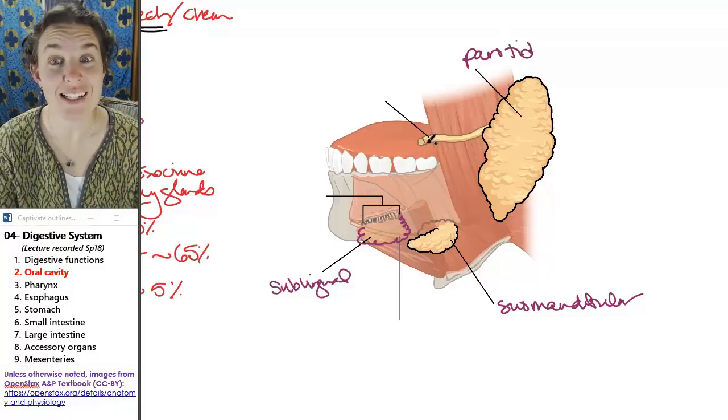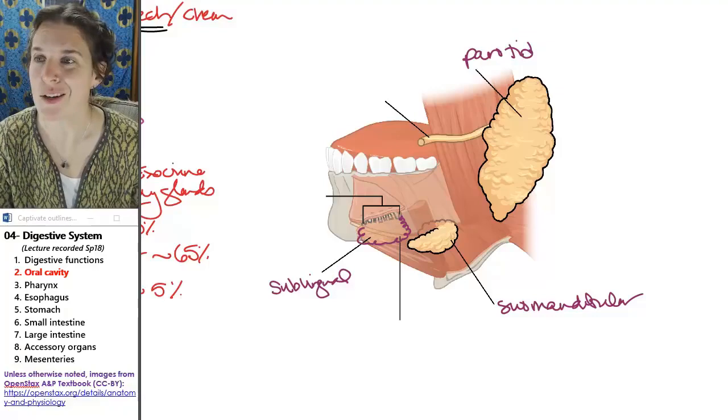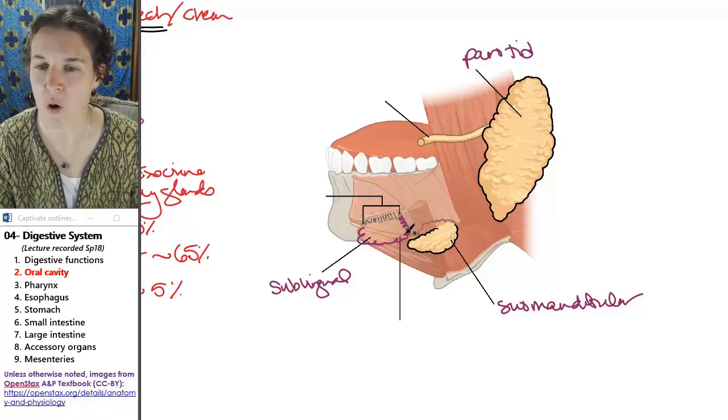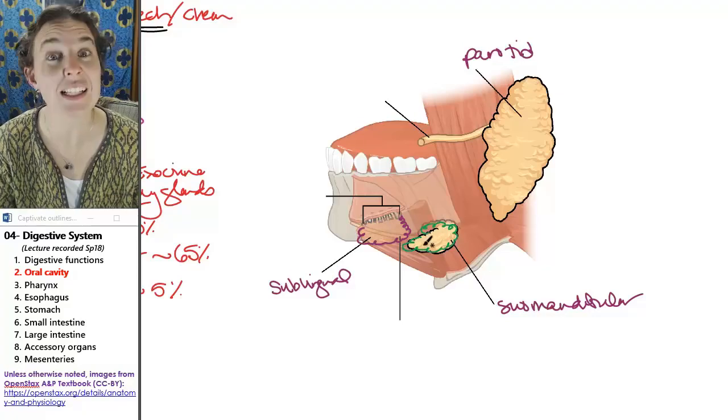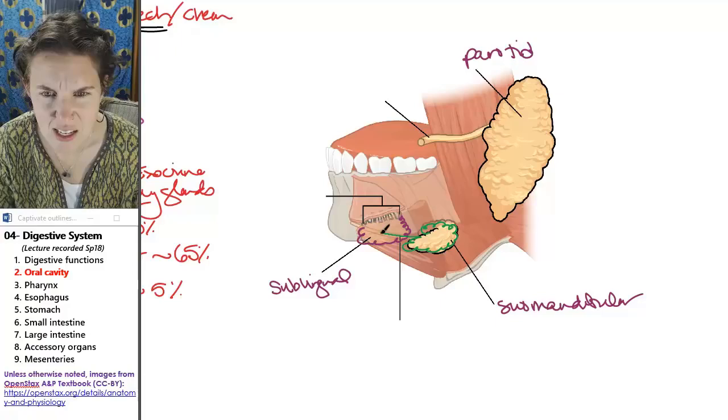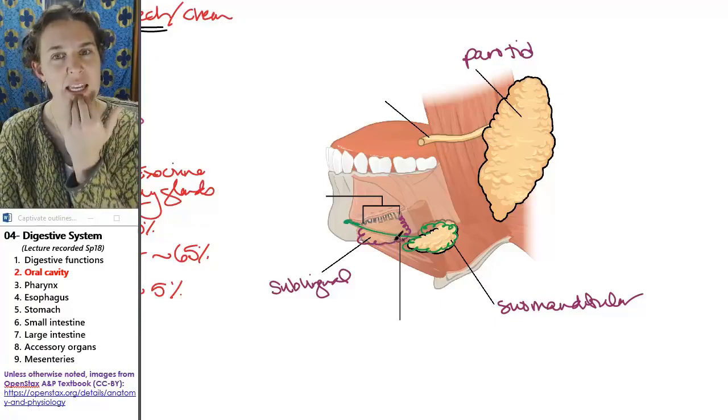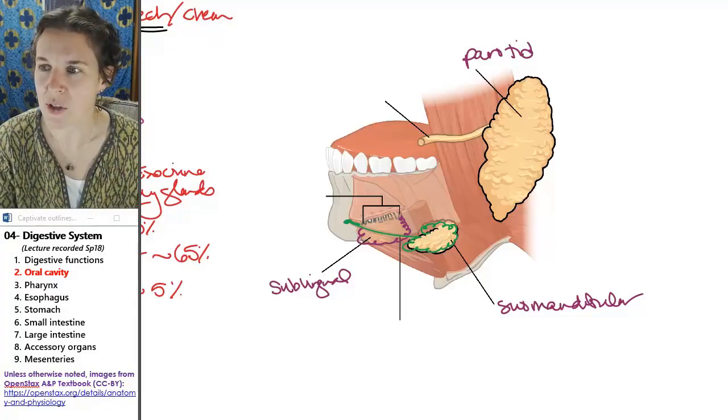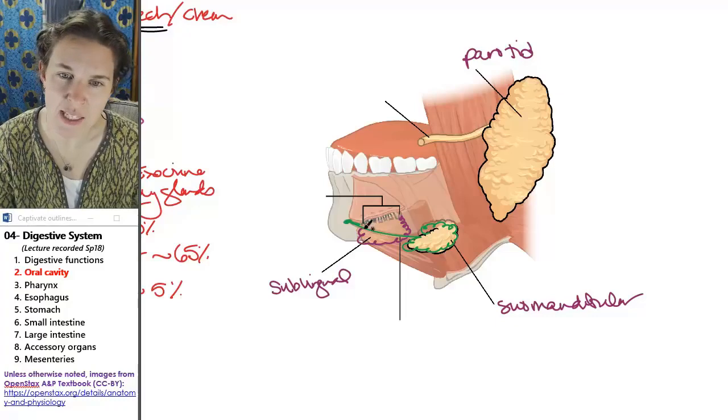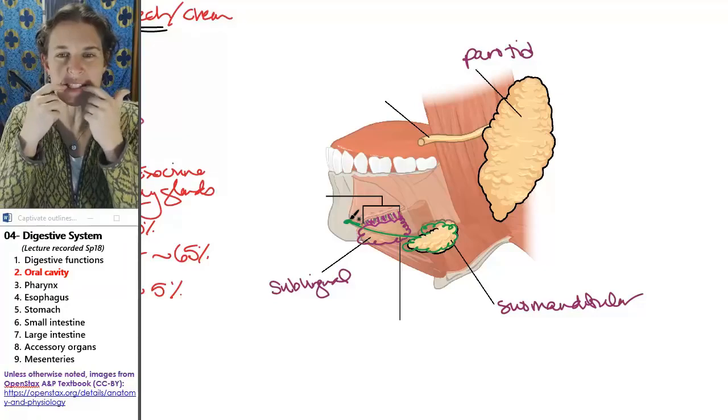Notice the parotid duct. Notice I'm going to draw the submandibular duct. Remember, this is the one. This is the glicker. Here's the duct. And you'll notice that it has that one opening below the tongue. Check out, my friend, the sublingual gland.